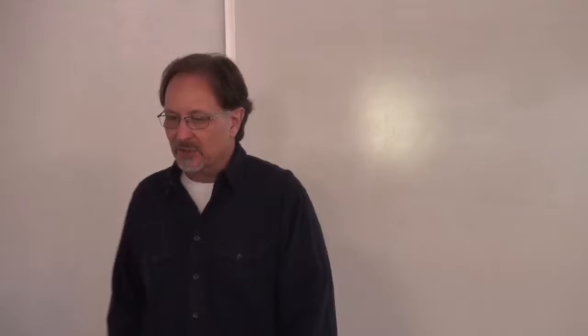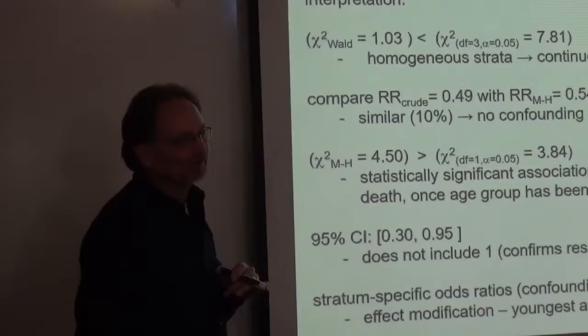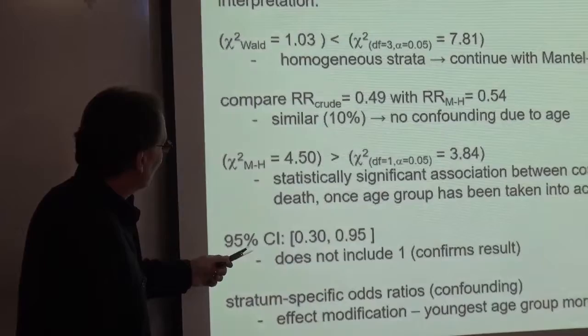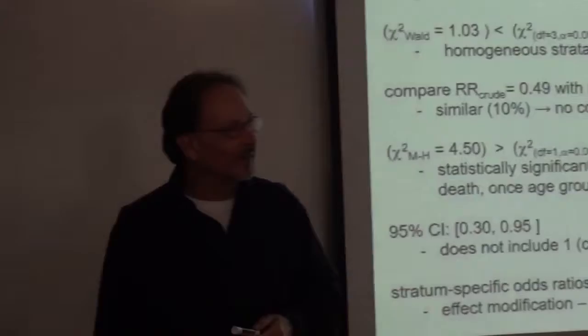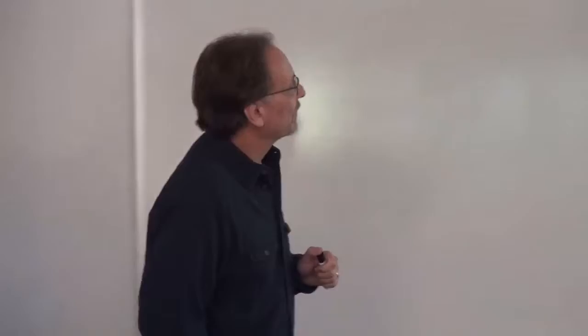Even though not one stratum was significant, when we do our analysis adjusted for age we suddenly get significance, and our crude looks like it's significant. Our chi-square wall is homogeneous, so we can proceed with Mantel-Haenszel. It's similar — delta percent is 10%, right at the cusp — but it looks like there's probably not a confounding effect. It looks like the youngest age group may experience the least benefit, according to these data.